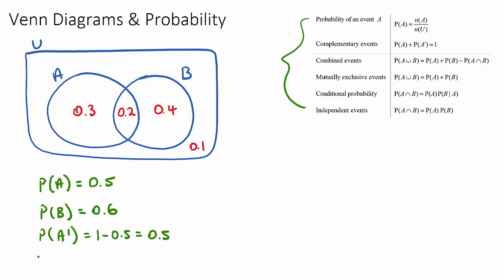The probability of not B would be 1 minus the probability of B, which is everything not in B, so it's the 0.1 and the 0.3, which is 0.4.